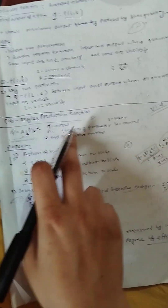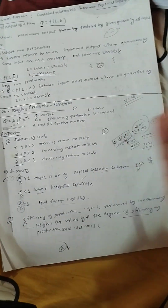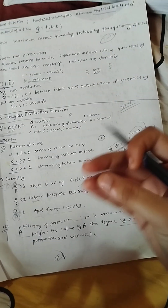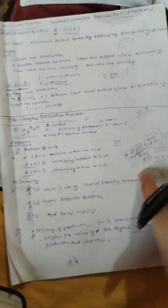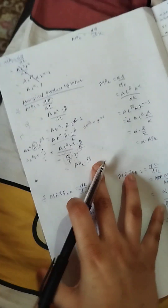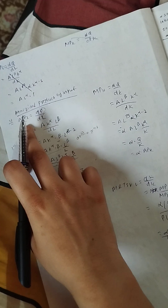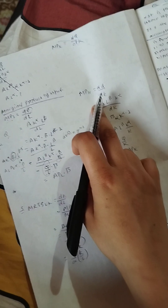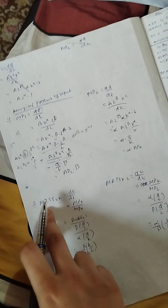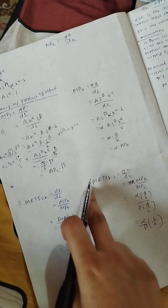Now we have to know the efficiency of production. Efficiency is represented by A - that is the value of A in the Cobb-Douglas function. So we have to learn three things for the exam worth 5 marks: MPL, MPK, and the marginal rate of technical substitution of K for L.